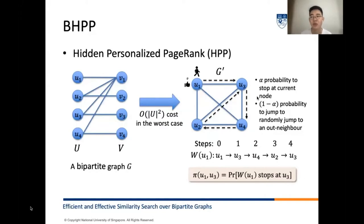Specifically, given a source node U1 in G', we start a random walk W from U1. At each step, the random walk W either stops at the current node with probability alpha or jumps to an out-neighbor of the current node randomly. The probability of the random walk W ending at U3 is denoted pi(U1, U3), namely the HPP of node U3 with respect to node U1.